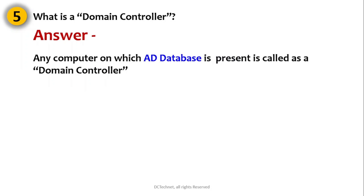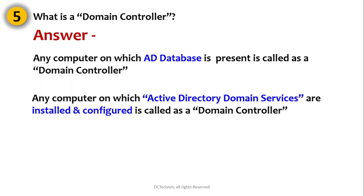Any computer on which the Active Directory database is present is called a domain controller. For example, if the Active Directory database is present on a computer called SRV01, then SRV01 is a domain controller. In other words, any computer on which Active Directory Domain Services are installed and configured is called a domain controller. These are two simple definitions.